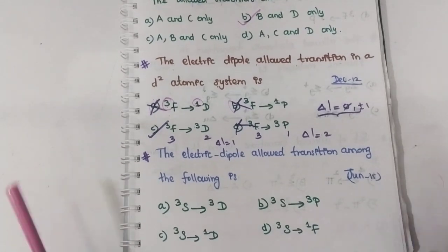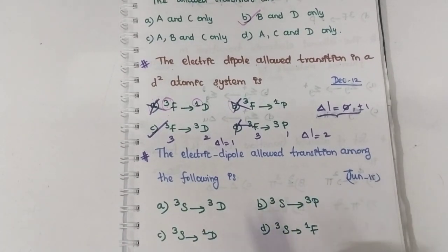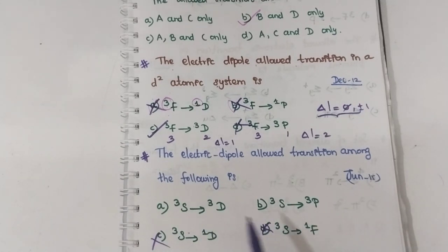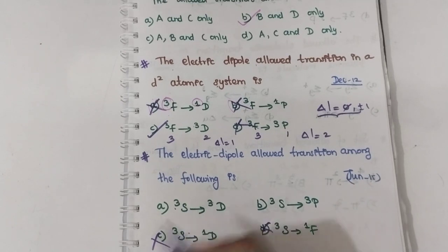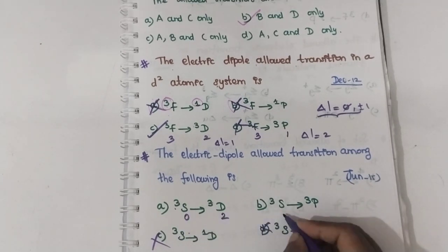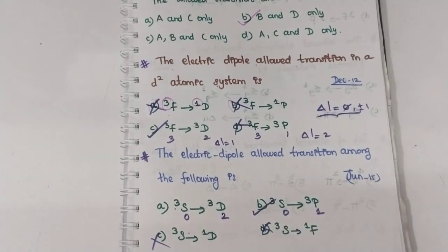For the next electric dipole allowed transition question: eliminate options with different spin multiplicities first. For the remaining candidates, check Laporte: one has L=0 and L=2, giving ΔL=2 (forbidden), and the other has L=0 and L=1, giving ΔL=1 (allowed). Hence the second option is the correct allowed transition.